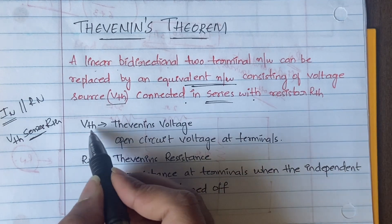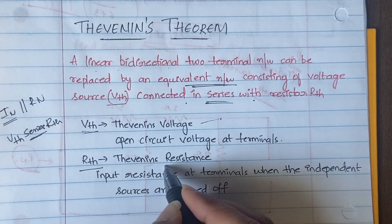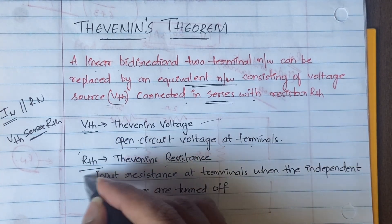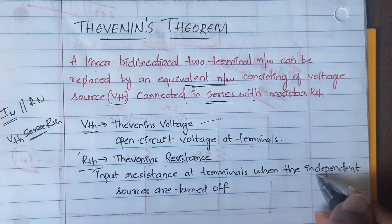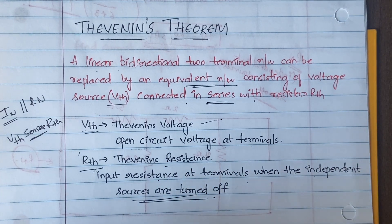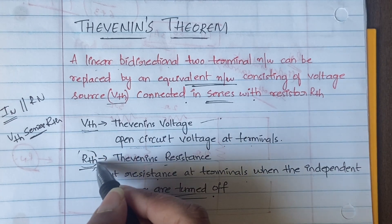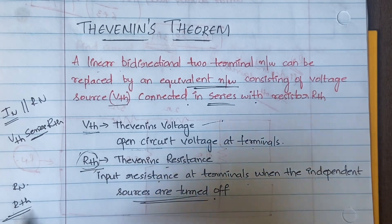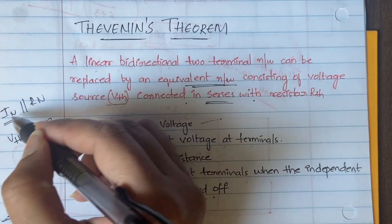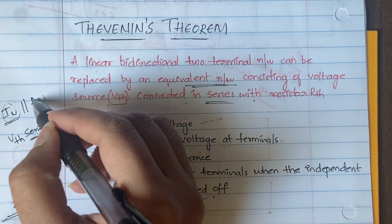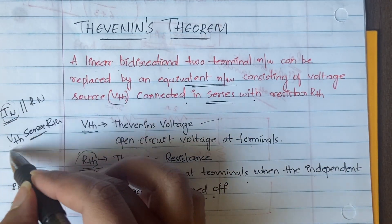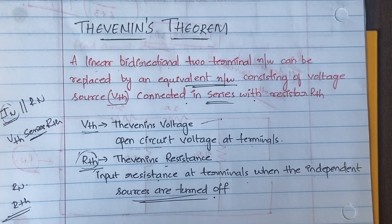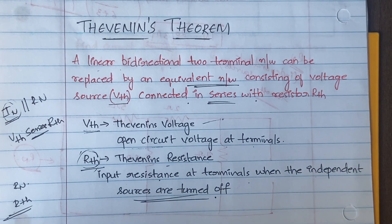VTH is Thevenin's voltage and RTH is Thevenin's resistance. VTH is the open-circuit voltage at the terminals, and RTH is the input resistance at the terminals when the independent sources are turned off — the same concept as in Norton's theorem. In Norton's theorem you connect a current source in parallel with the resistance; in Thevenin's theorem you connect a voltage source in series with the resistance.